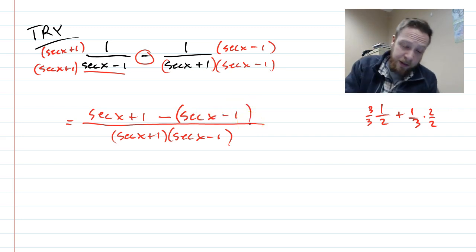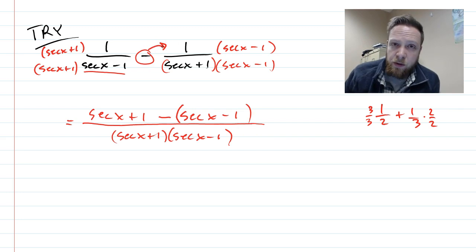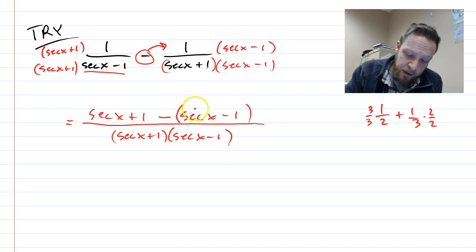That minus in fractions, that is the number one reason people get adding and subtracting fractions like this wrong, because often they'll make it a negative secant, and they won't make it a negative negative one, so they'll be having a negative one in the end. Just be careful about that.